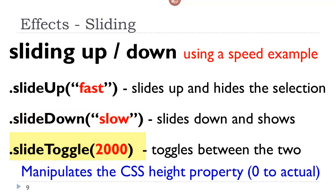So slide up allows us to slide up and hide the selection, rather than just hiding it. Slide down allows us to slide down and show it. And slide toggle allows us to toggle between the two, sliding up and sliding down. Now, let me just explain that what is happening behind the scenes.